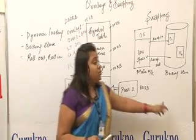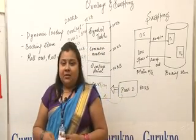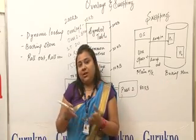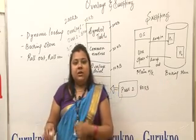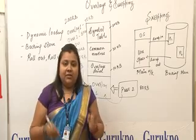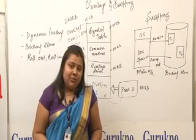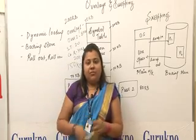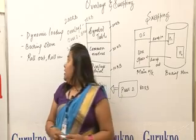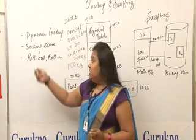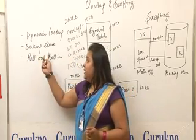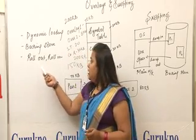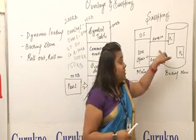Now moving on to swapping. Swapping is a concept where data available in secondary memory — that is, on our hard disk — is moved to the main memory, and the data which is not currently or frequently needed in the main memory is swept out back to the secondary memory. We will come across these terms in swapping: backing storage, which is the same as secondary storage, that is the hard disk, and second is rollout and rollin.